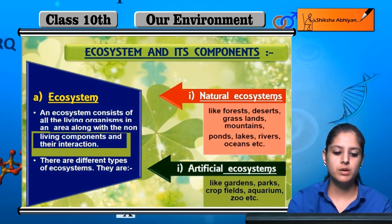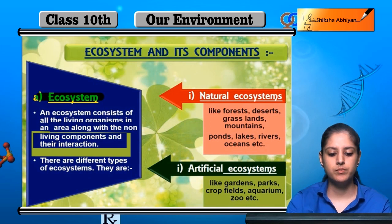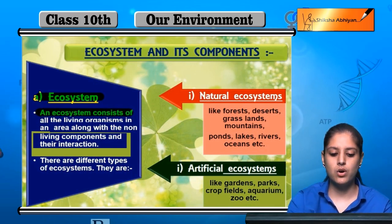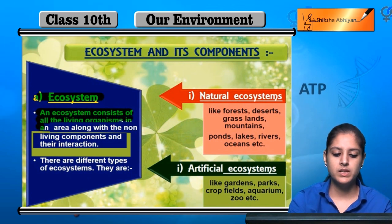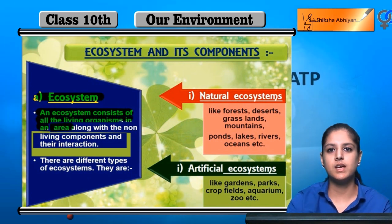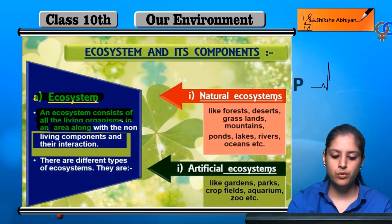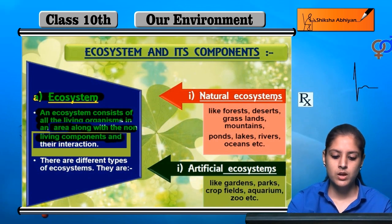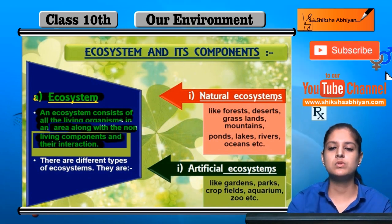Now talking about an ecosystem — what is an ecosystem? An ecosystem consists of all the living organisms in a particular area, and the non-living components that are interacting within that area.